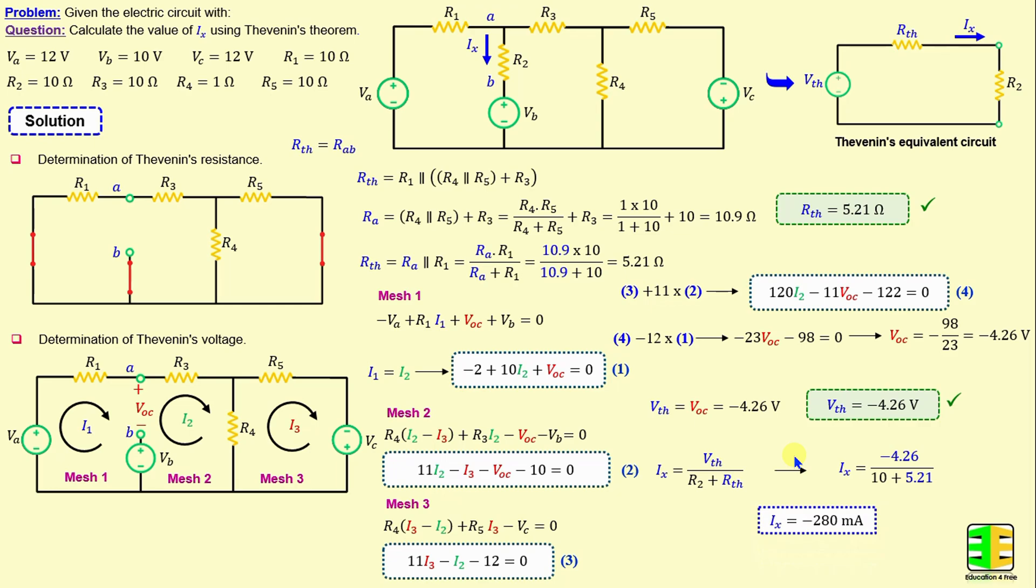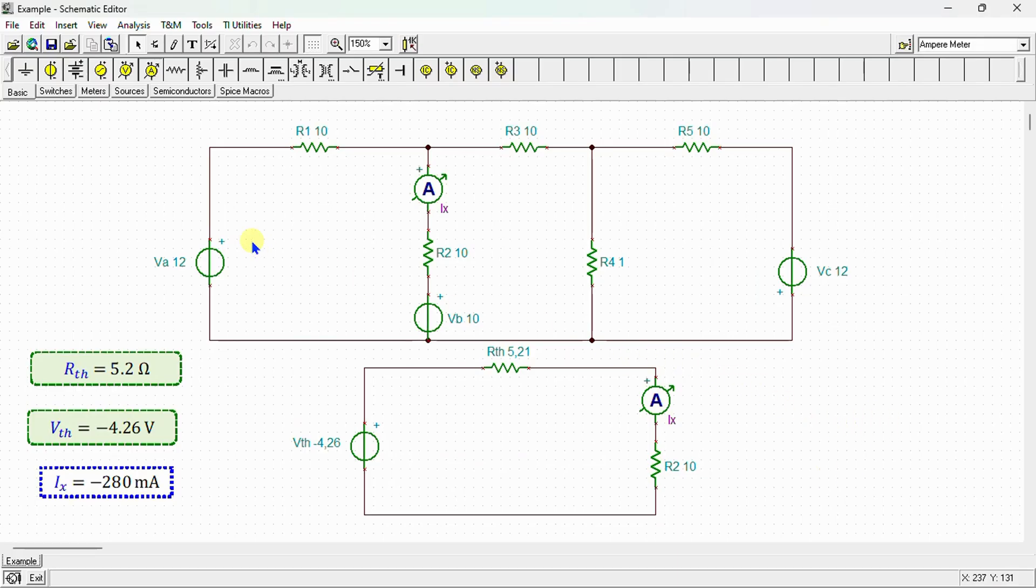After completing the calculations, I perform a simulation using SPICE to verify our results. Now, let's proceed to the SPICE environment. Here, our network's drawn in SPICE simulator. This is the original circuit and this is the Thevenin's equivalent circuit. I connect here an ammeter in order to calculate the current Ix through the resistor R2.